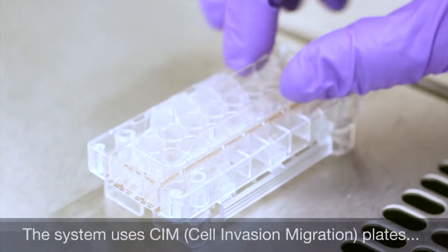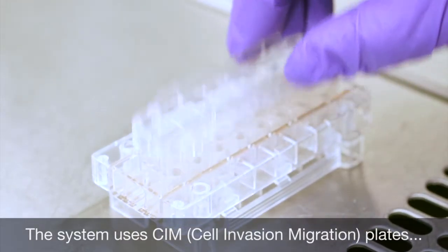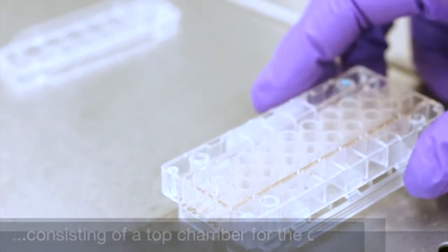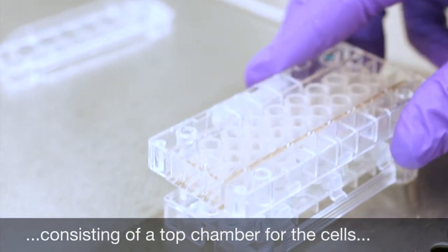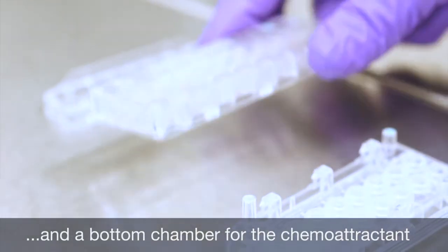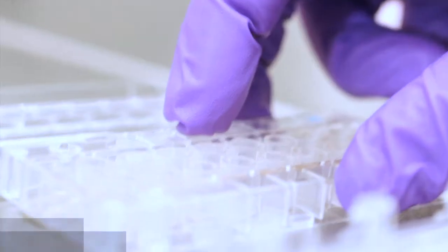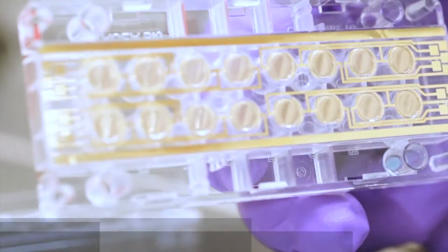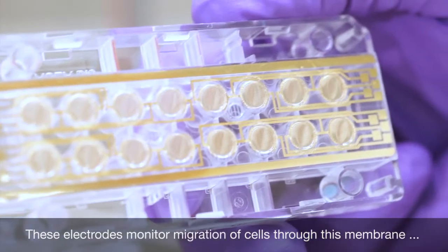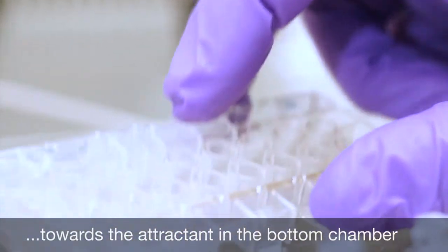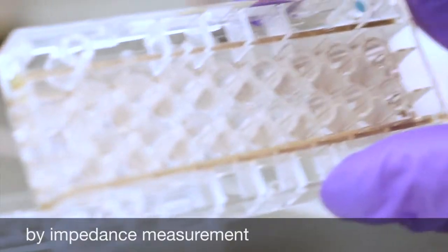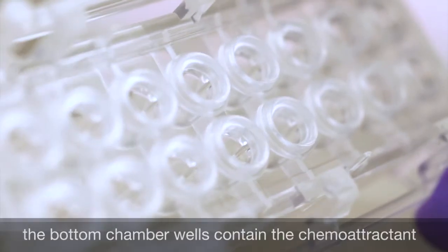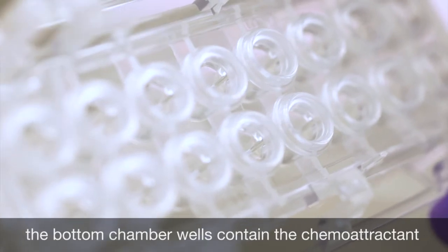A special plate called the CIM-Plate serves as support for the upper chamber containing the cell suspension, while the lower chamber is filled with the chemoattractant. The upper chamber has an electrode at the bottom of the membrane which measures the impedance signal. This way, migrating cells attracted by the chemoattractant pass through the membrane to adhere to the electrode, inducing a modification of impedance values.